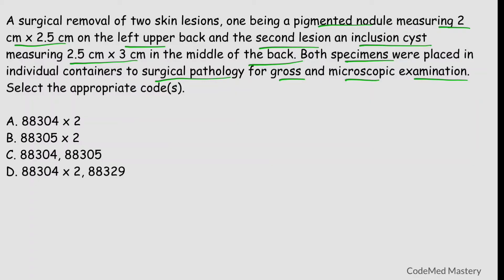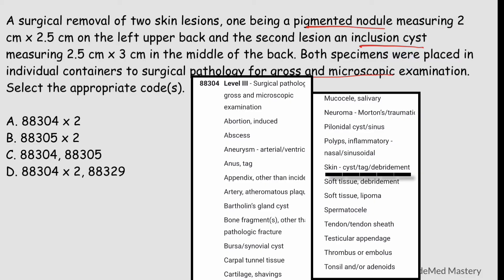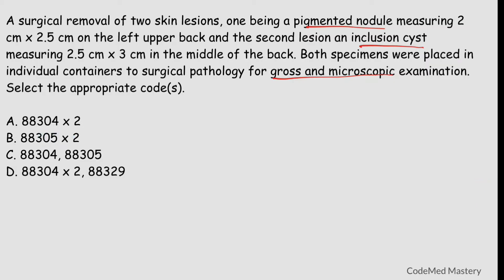In surgical pathology we code depending on the severity and which specimen is mentioned. Here there are two lesions: a pigmented nodule and an inclusion cyst. In option A, 88304 × 2 is listed — but 88304 covers specimens such as skin cyst. Only the inclusion cyst falls under 88304; the pigmented nodule is not present in 88304, so we cannot multiply it two times. Option A is wrong.